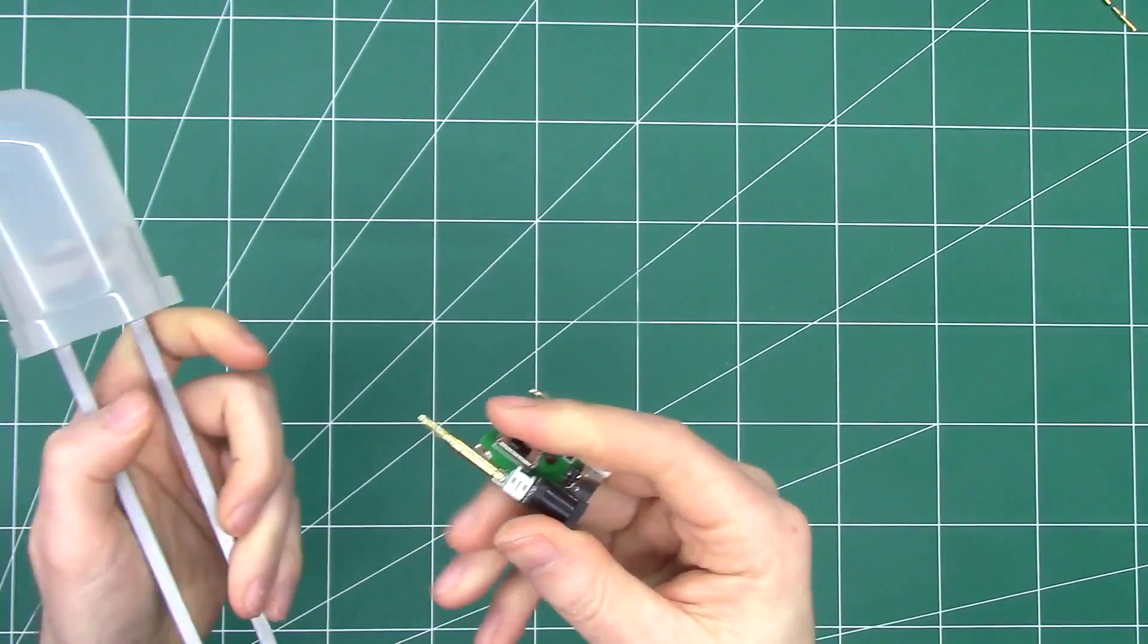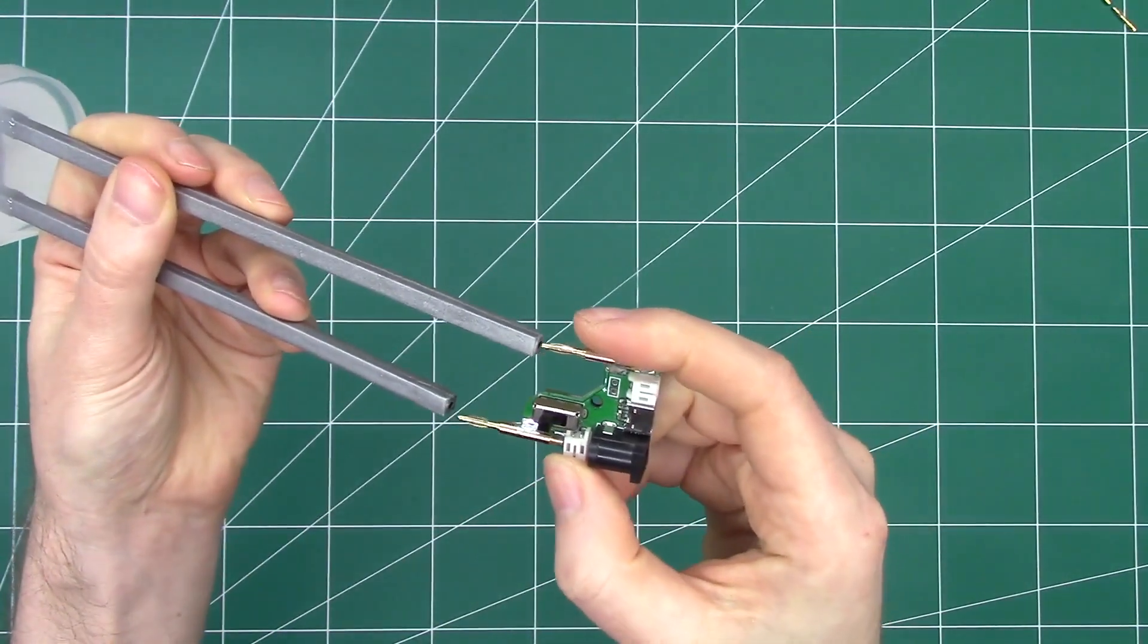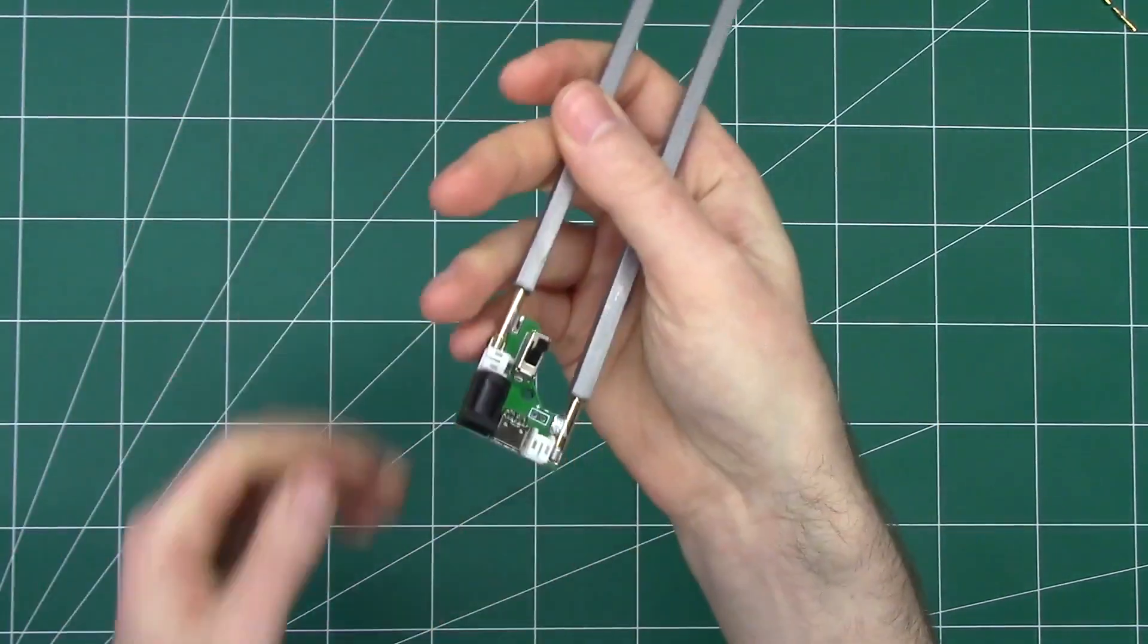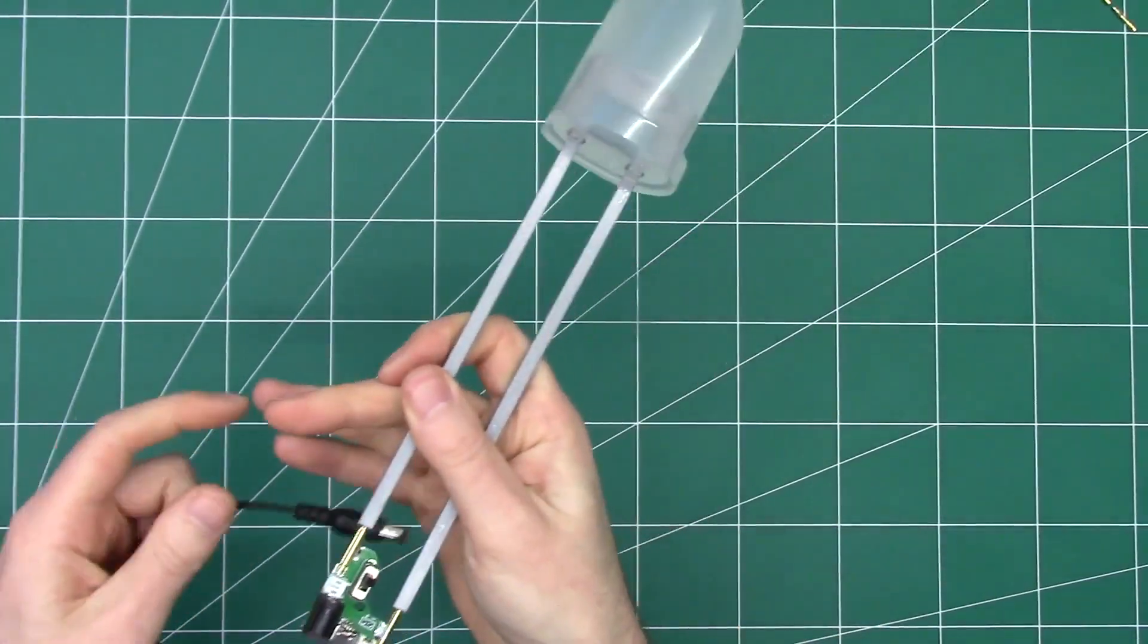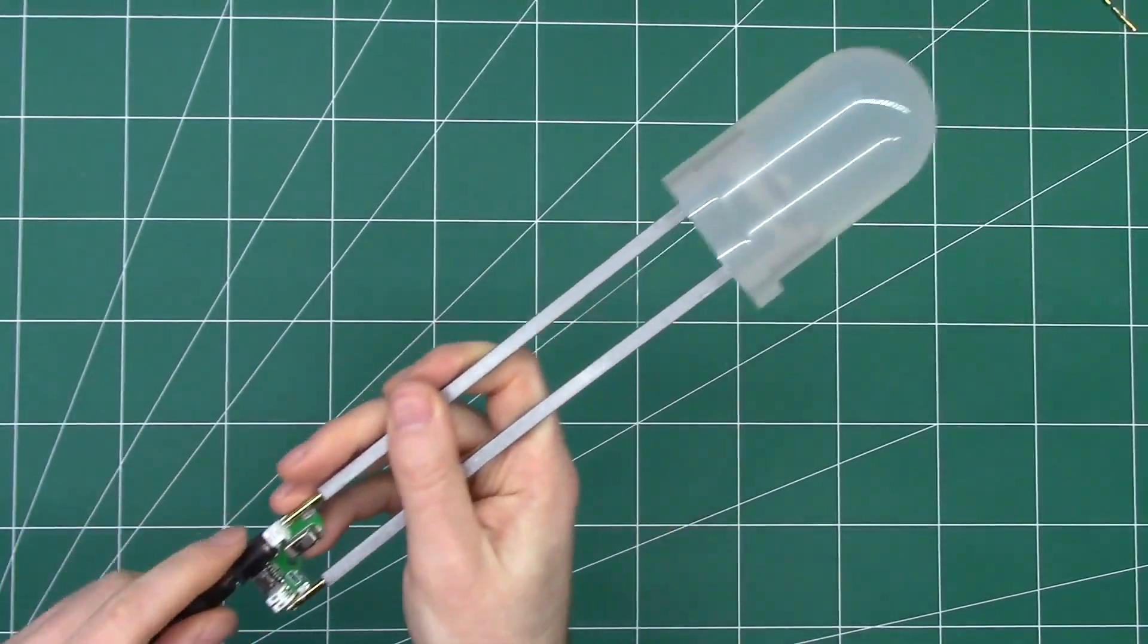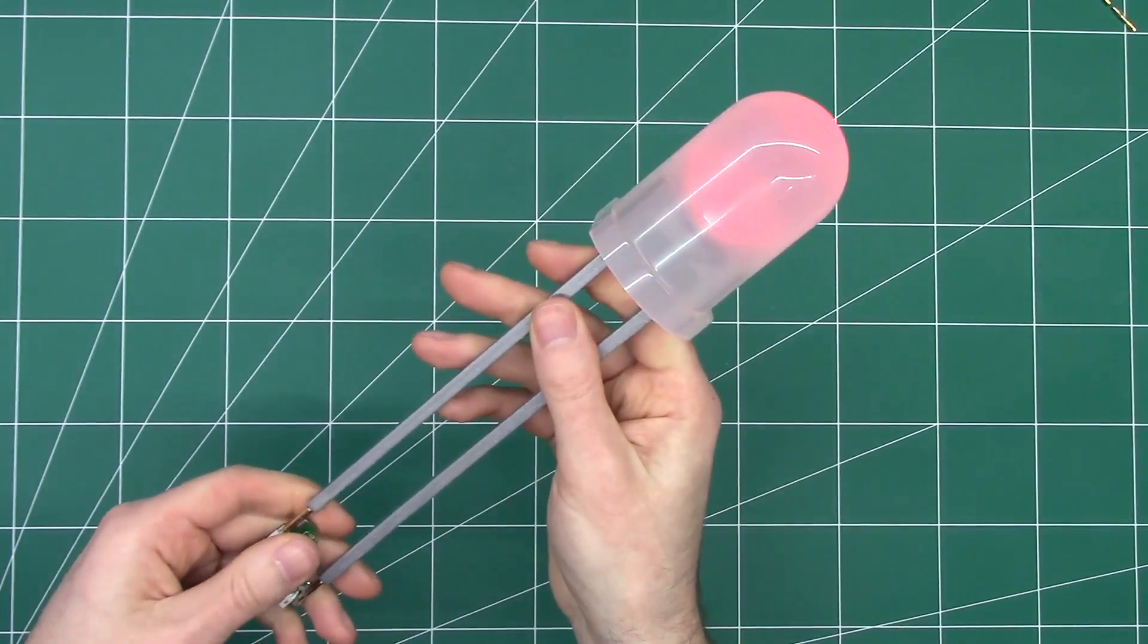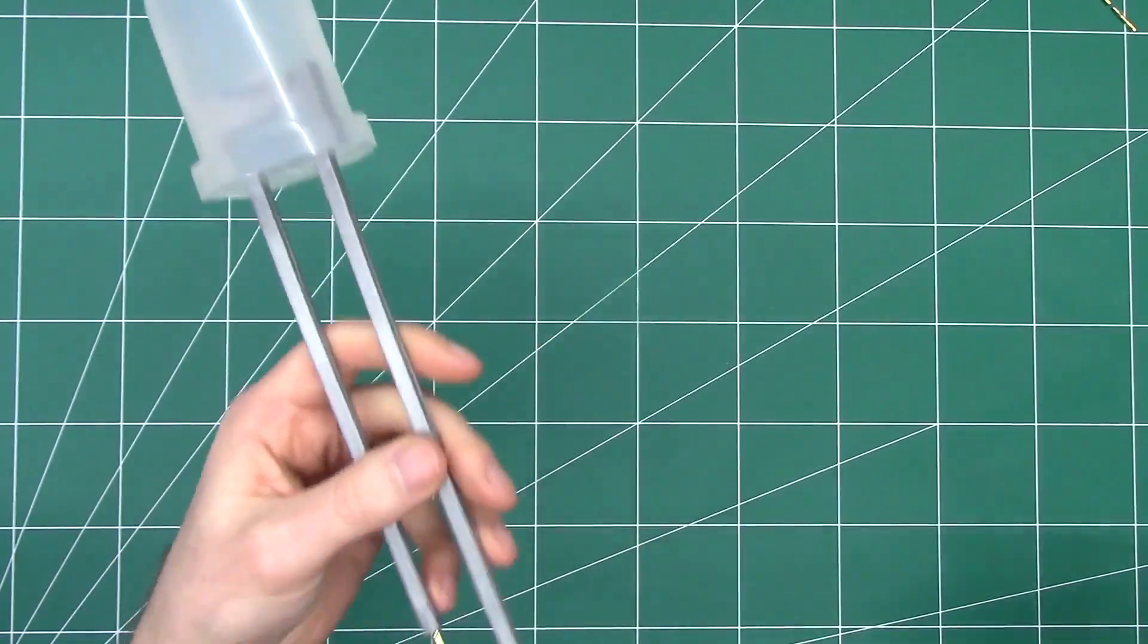It's also got a switch so that can be used to power your giant LED. You just plug it into a DC barrel jack and then you can switch it on and off.